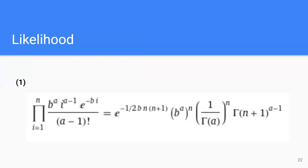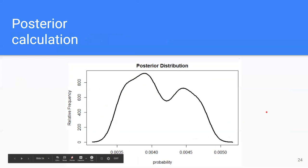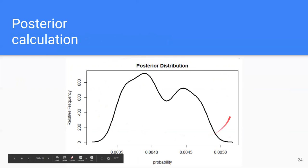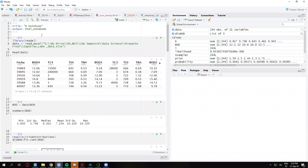For the likelihood, as we saw in class, this is the product of the density functions, which we developed in software. This leads to a large expression that we solve in the R code shown later. After all the calculations in R, we obtained the Jeffreys prior and its function. Multiplying the prior by the likelihood of our data variable, we obtained the posterior probability distribution.